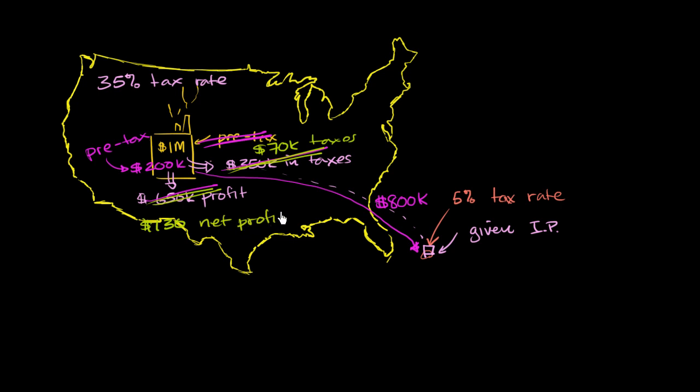And then this character right over here, let's say it has very minimal cost. Let's say it has no cost for simplification. It would have some to do some paperwork. All of this would essentially be profit. Maybe have a few thousand dollars in cost, but we'll ignore that for now. So all of this would be its pre-tax profit. It would have to pay 5% of it. 5% in taxes to this country right over here. So 5% of $800,000 is $40,000. So it would pay $40,000 in taxes to the government of this island. And then it would be left with the remainder $760,000 in its net profit.